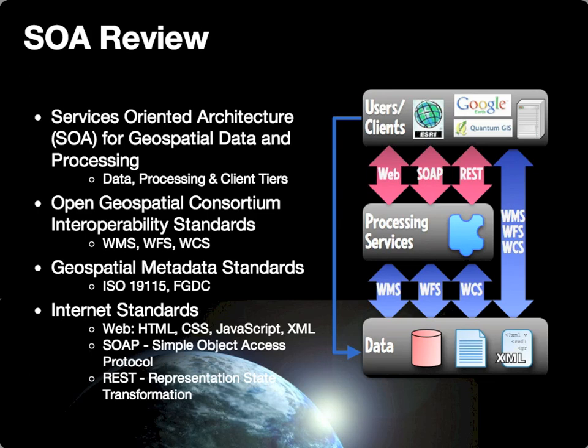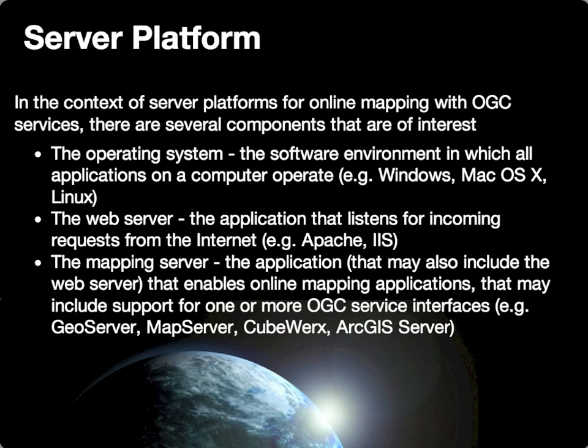Now we are starting to work on the data tier — the lowest level in the services-oriented architecture where the data are managed and from which you may be able to publish Open Geospatial Consortium services based on your data. In that context, we will be using the GeoServer platform as the tool to take our own data and share them over the web using the open standards we've already discussed.